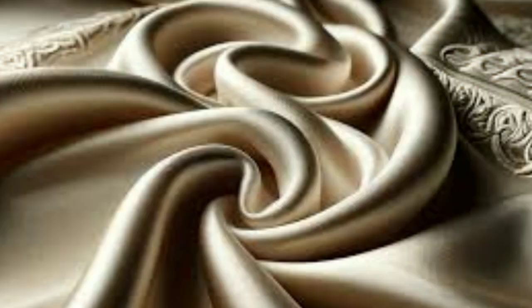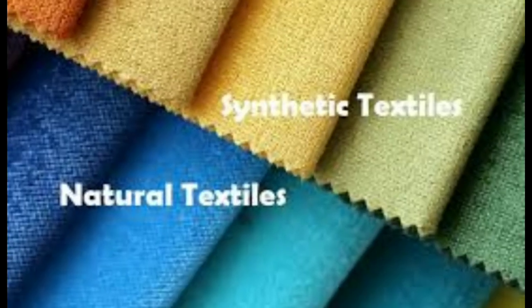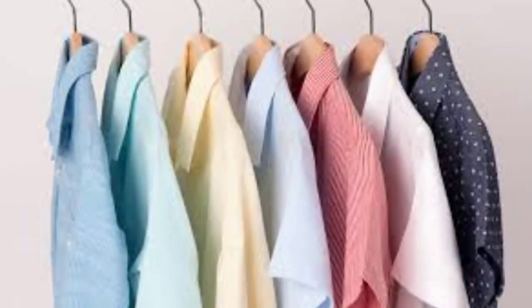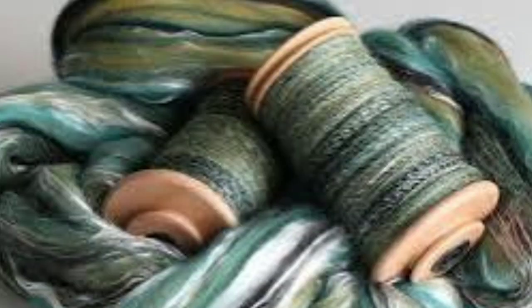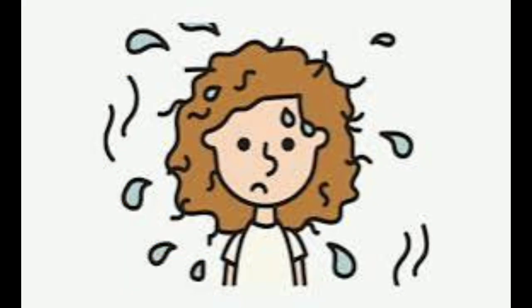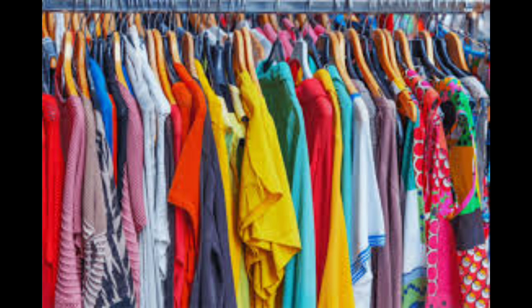Synthetic fibers are fibers obtained artificially by chemical processes. They include nylon, rayon, and polyester. They are made from chemicals mainly obtained from petroleum. Clothes made from synthetic fibers are stronger than those made from natural fibers. They do not wrinkle easily and dry quickly. However, synthetic fibers have less absorption capacity and do not absorb sweat, so fabrics made from these fibers are not suitable for hot and humid weather.